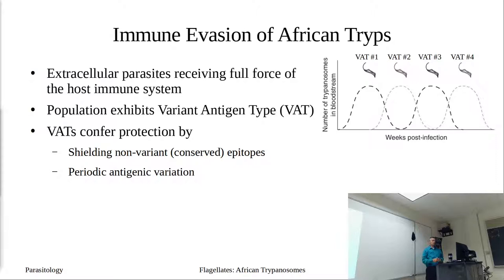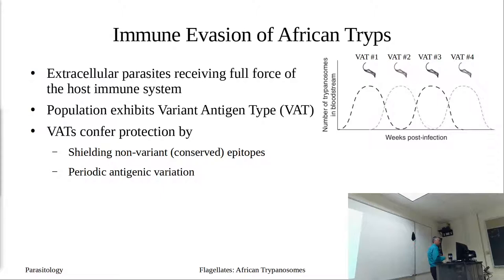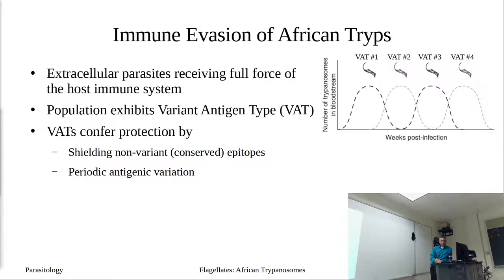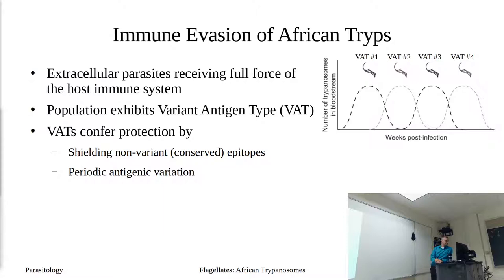The periodic antigenic variation allows the overall super-population to survive. The VSGs also shield the non-variant, conserved epitopes — other surface proteins needed for nutrient absorption and transport. If the body recognized those, it would be very effective at clearing the entire super-population. So the VSGs are large, protecting those conserved epitopes, and when the body responds it's only targeting the VSGs.